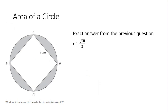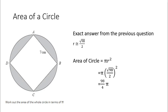Working out the area of the circle using the exact radius from the previous part: area equals pi r squared. Squaring the fraction — square root of 98 over 2 — means squaring top and bottom. The square root of 98, squared, is just 98. Two squared is 4. So we get 98 over 4 pi, which simplifies to 24.5 pi exactly, or equivalently 49 over 2 pi.